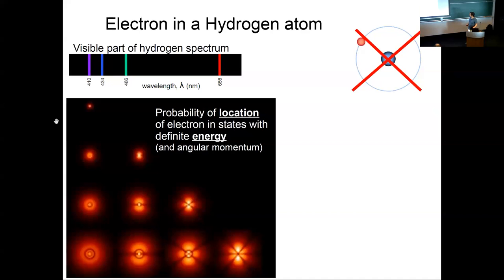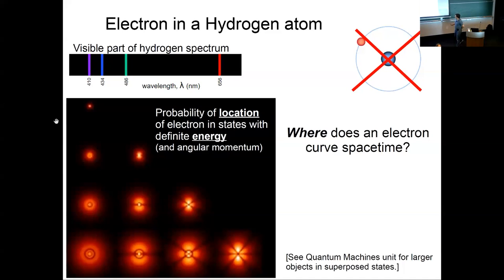This is relevant, in that a state of definite energy of a bound hydrogen atom is a state of superposition of various positions. It could be here, here, here, here. And so the question for trying to write Einstein's equation for an electron to see how it curves space-time is, where exactly is it going to be curving space-time? If it's distributed like this, is it curving space-time over here? Is it doing it over here, over here, over here? Is it some combination of those?